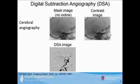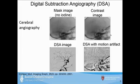DSA is considered the gold standard of vascular imaging, providing a very clear image of the blood vessels. However, if there is patient motion between the mask and contrast images, motion artifacts appear and compromise image quality — light and dark regions obscure the vessels.